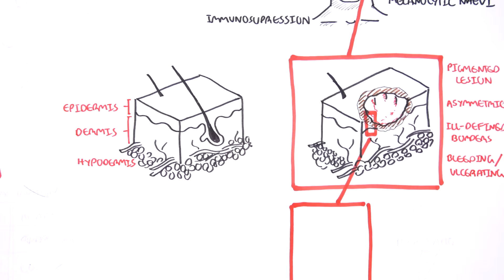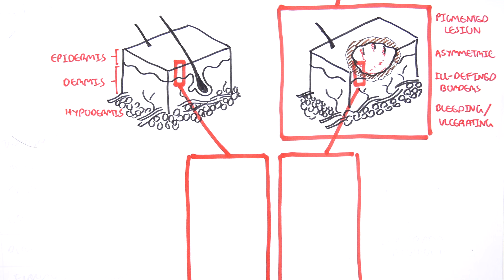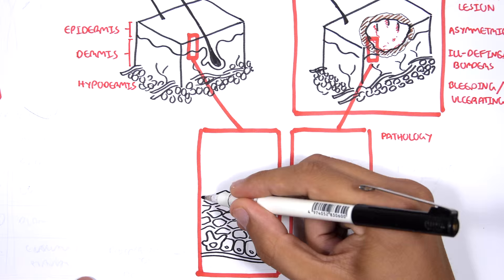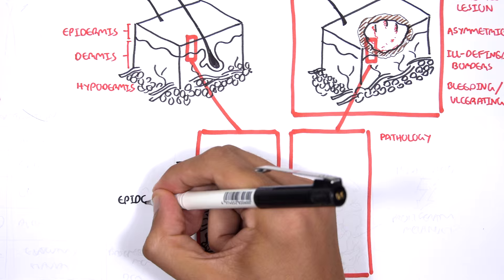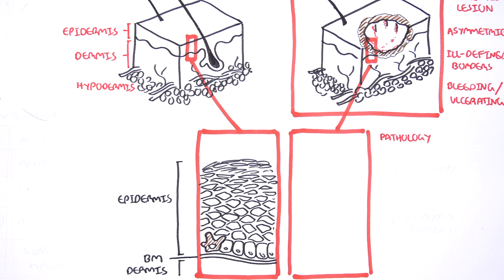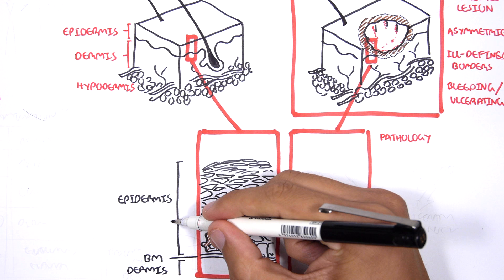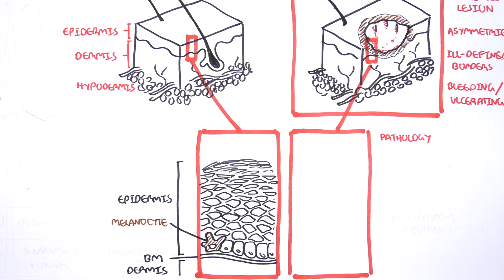So how does melanoma develop? Well, let us zoom into the epidermal layer of the normal skin and compare it to the epidermal layer of a skin with melanoma. We are now looking at the pathology of melanoma. So here are some cells that make up the epidermis. Here again is our epidermal layer and below the epidermis is our dermis. In between the epidermis and the dermis is our basement membrane. Essentially, this is what separates the epidermis to the dermis.